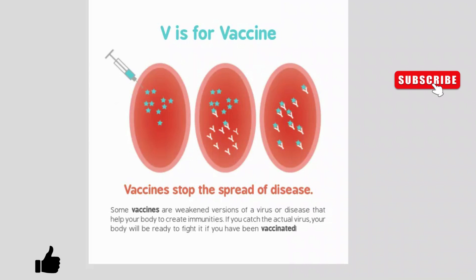V is for vaccine. Vaccines stop the spread of disease. Some vaccines are weakened versions of a virus or disease that help your body to create immunities. If you catch the actual virus, your body will be ready to fight it if you have been vaccinated.